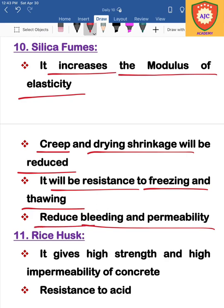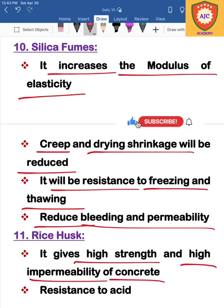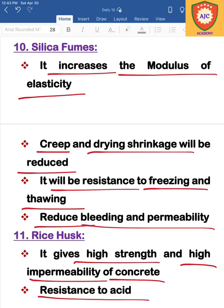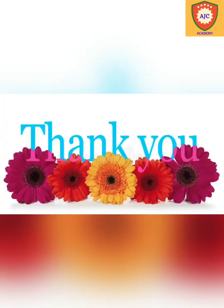The next admixture is rice husk ash, which is mixed with concrete to produce high strength, high impermeability, and acid-resistant concrete. Admixtures are an important topic for the exam. In the next class, we will cover the concrete topic. Thank you, see you.